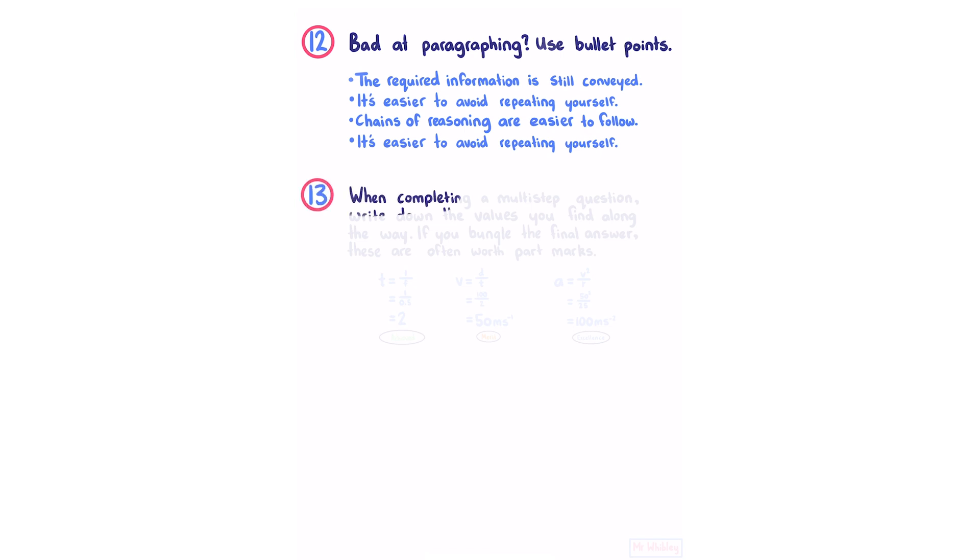Number 13, when completing a multi-step question, write down the values you find along the way. If you bungle the final answer, these are often worth part marks. For example, if the question was to find the acceleration, finding the time might be worth an achieved, using that to find the velocity might be worth a merit, whereas the final answer could be worth a full excellence.